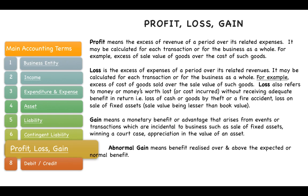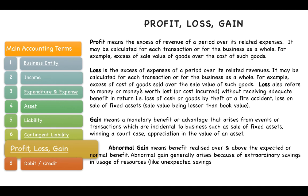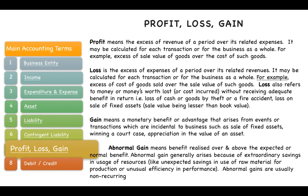Depending on appreciation in asset value, you may or may not record it in the books. Abnormal gain means benefit realized over and above the expected normal benefit. Abnormal gains generally arise due to extraordinary savings in resource usage, like unexpected savings in raw material for production or unusual efficiency in performance — they are usually non-recurring.